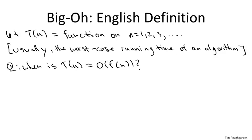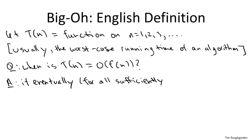But for starters, let's begin with an English definition. What does it mean for a function to be big O of F of n? It means eventually, for all sufficiently large values of n, it's bounded above by a constant multiple of F of n.